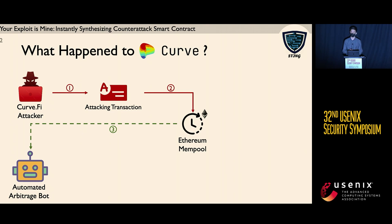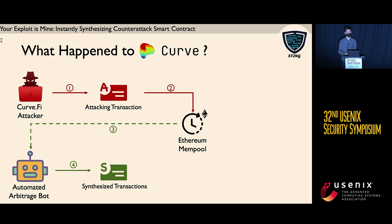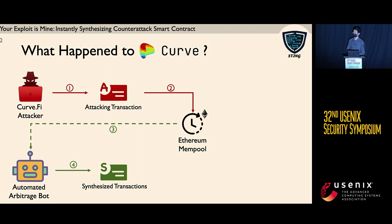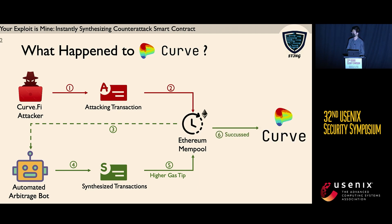This also includes an arbitrage bot. The bot realizes this transaction can bring a huge amount of profit to the sender. So the bot tries to synthesize one or a set of transactions that will mimic the original behavior and send the profit to the bot owner. Those synthesized transactions are sent to the memory pool as well, but with a higher gas tip or gas fee. Due to the higher gas fee, those synthesized transactions take effect first, meaning it is the bot which launched the attack and gets the profit.